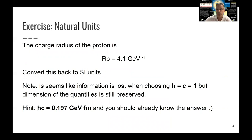If you want to do a quick exercise here, I invite you to calculate the charge radius of a proton, which is 4.1 over GeV, or per GeV, and convert this back to SI units.